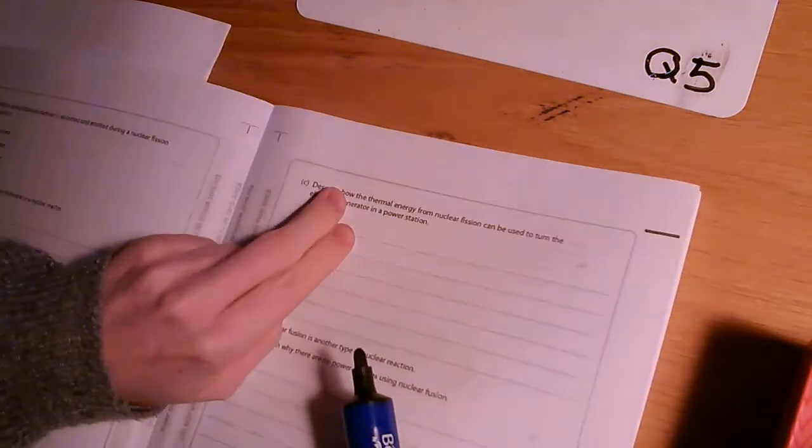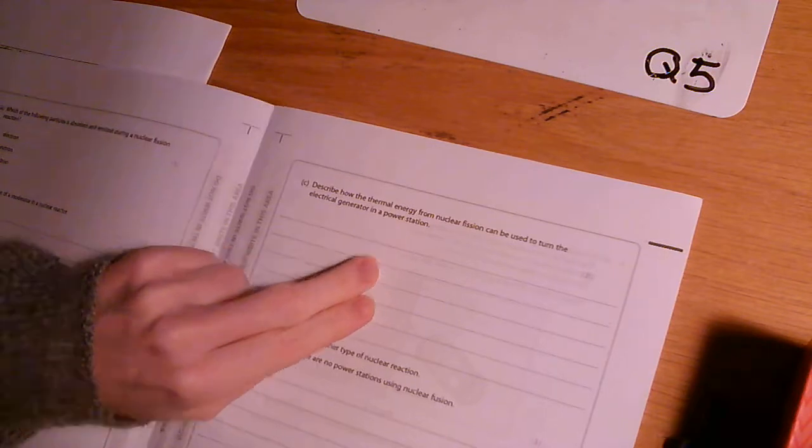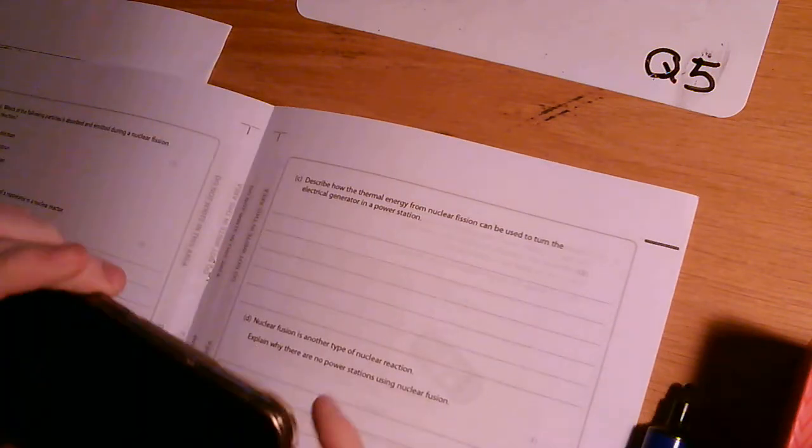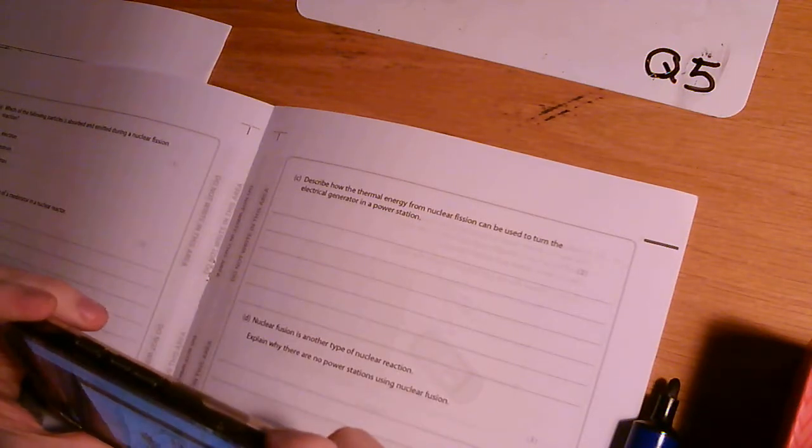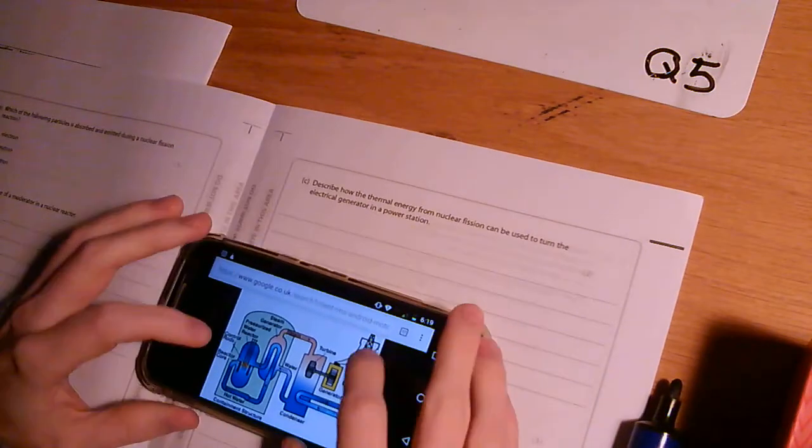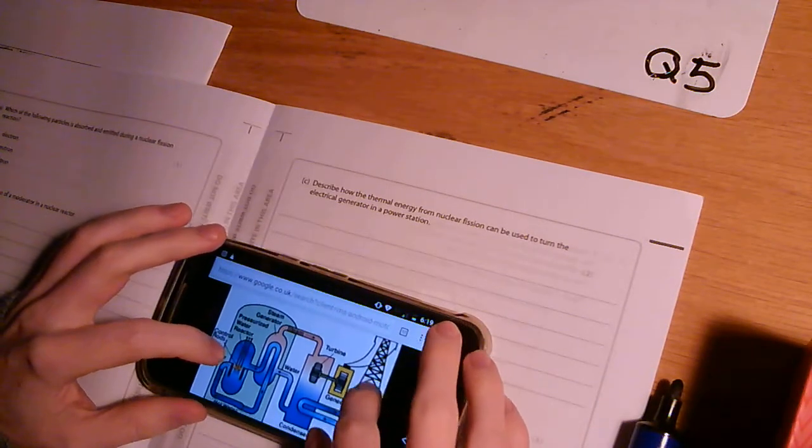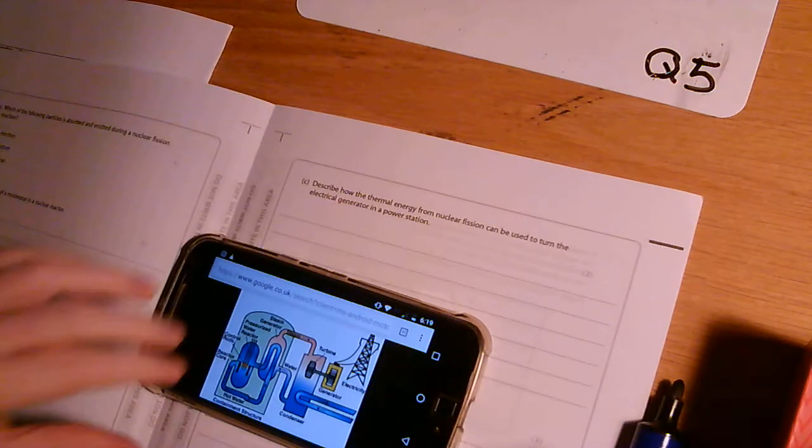Two more. Describe how the thermal energy from nuclear fission can be used to turn the electrical generator in the power station. So this is where you basically go, okay, I'm just going to regurgitate everything that I know. Let's get the right one up. There we go. About the power station. They're only asking for two marks on this one. You couldn't really give a six mark answer if you needed to.